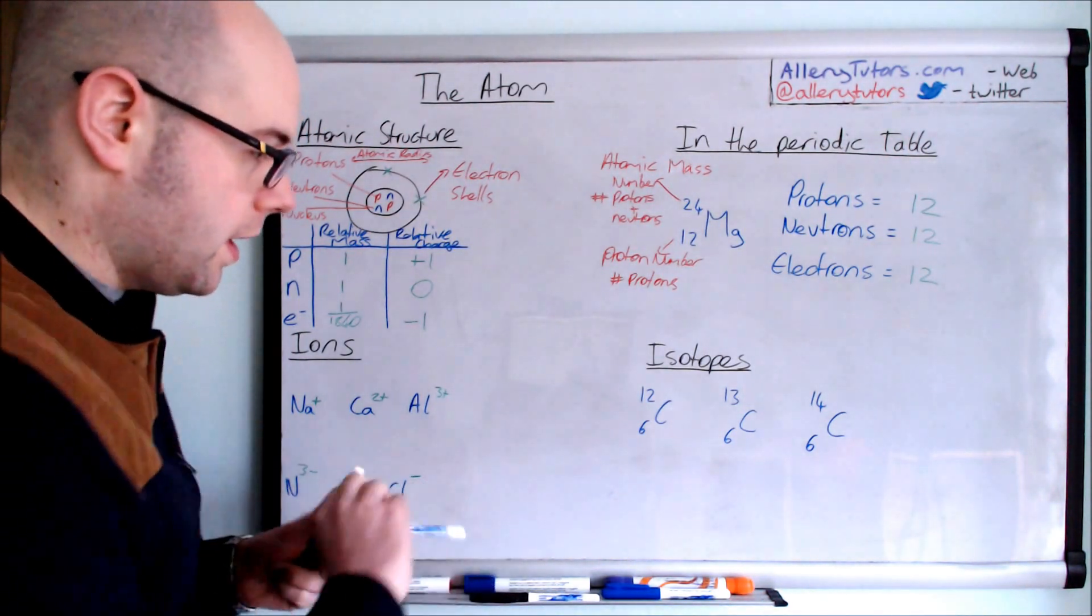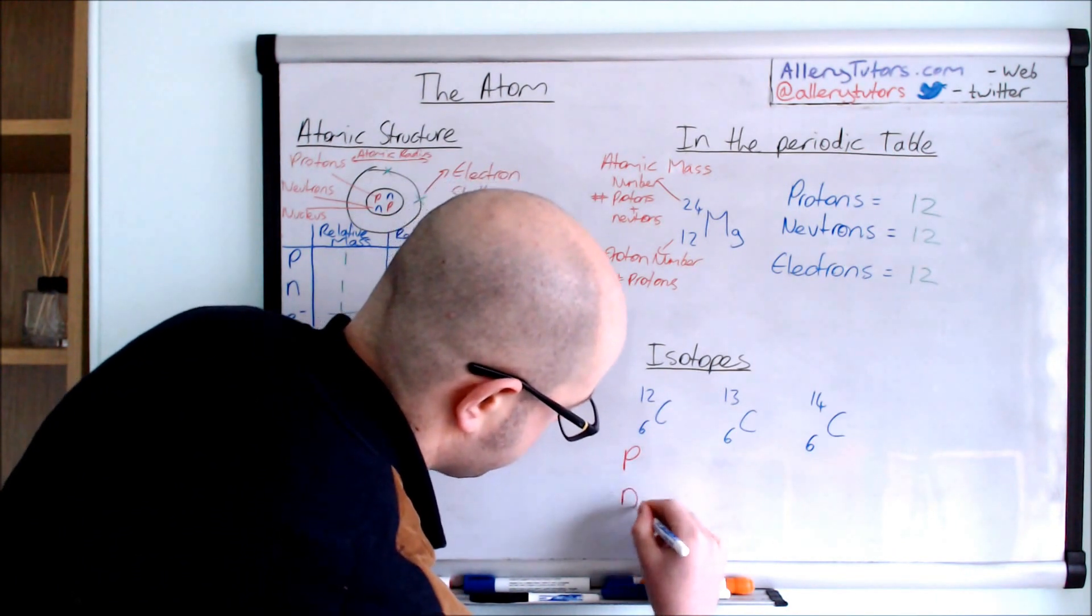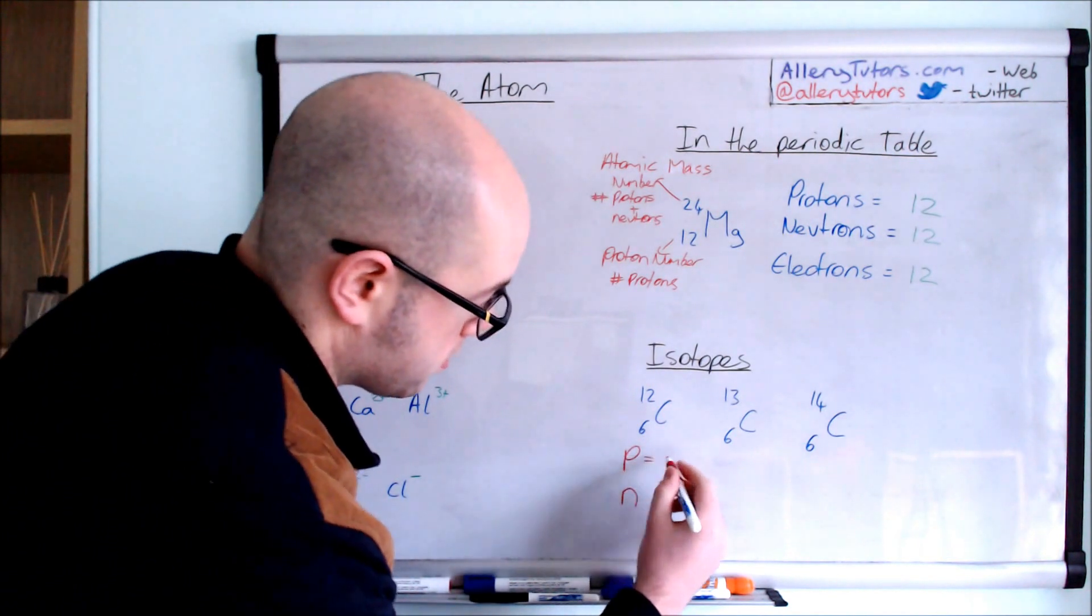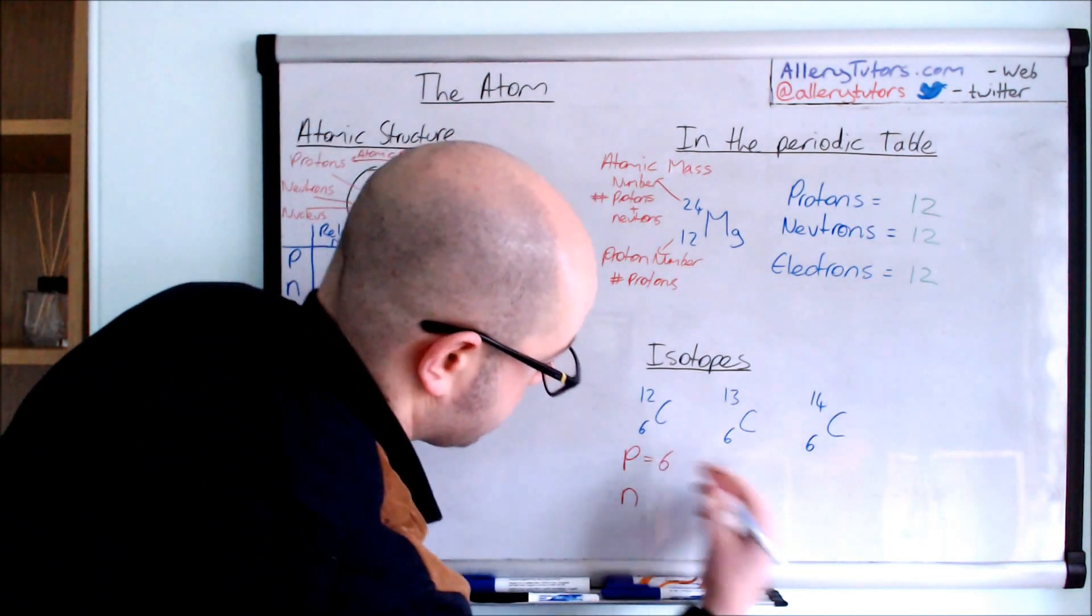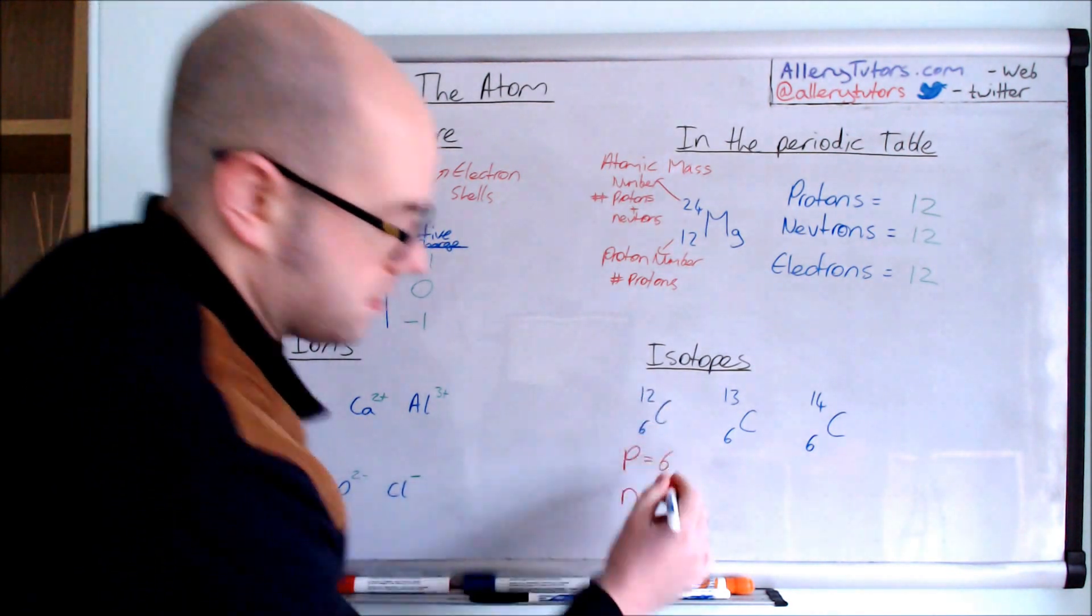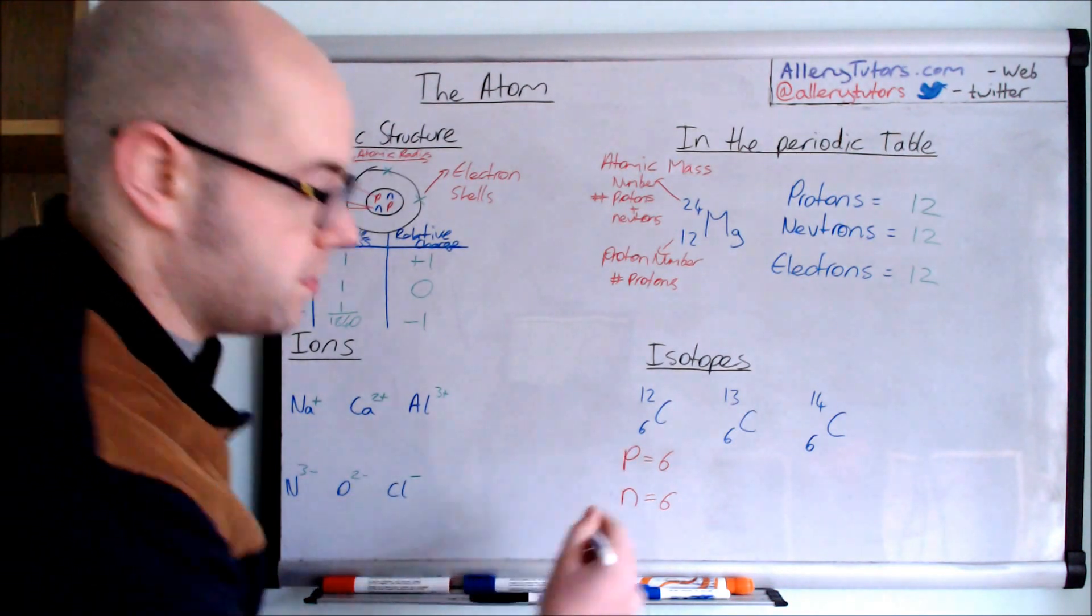So we're going to start with this one. So this is carbon, protons, neutrons. So you see carbon's got six protons in the bottom here. So we're just going to put six on there. The number of neutrons is 12 minus six, which is also going to be six. So we've got the same number of protons and neutrons.